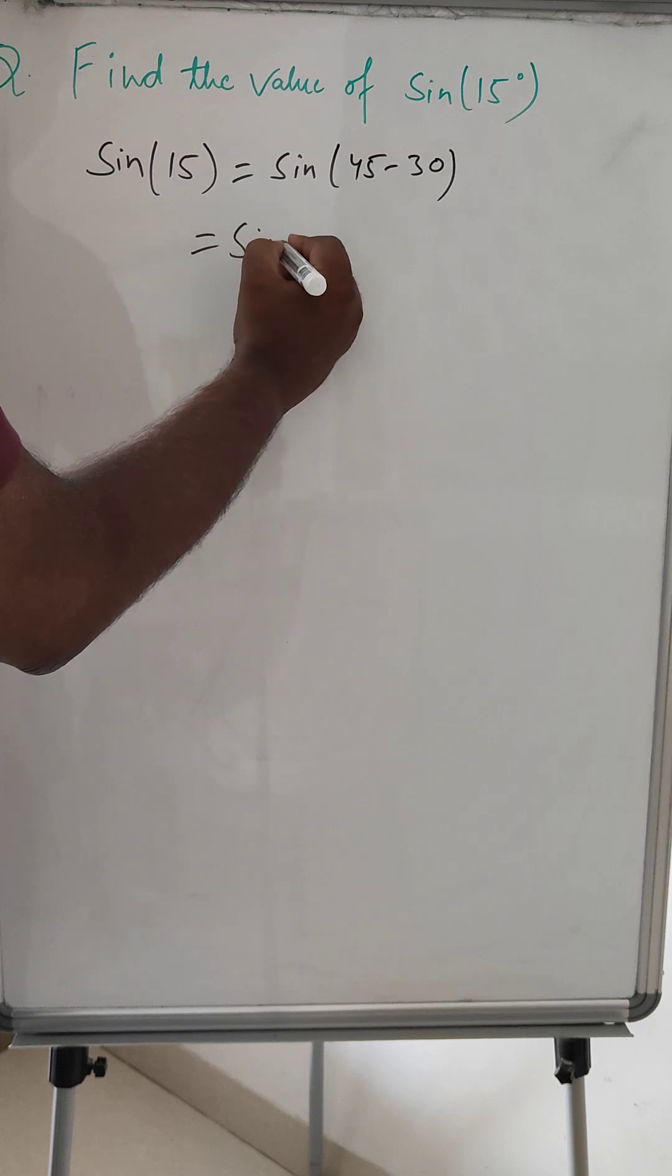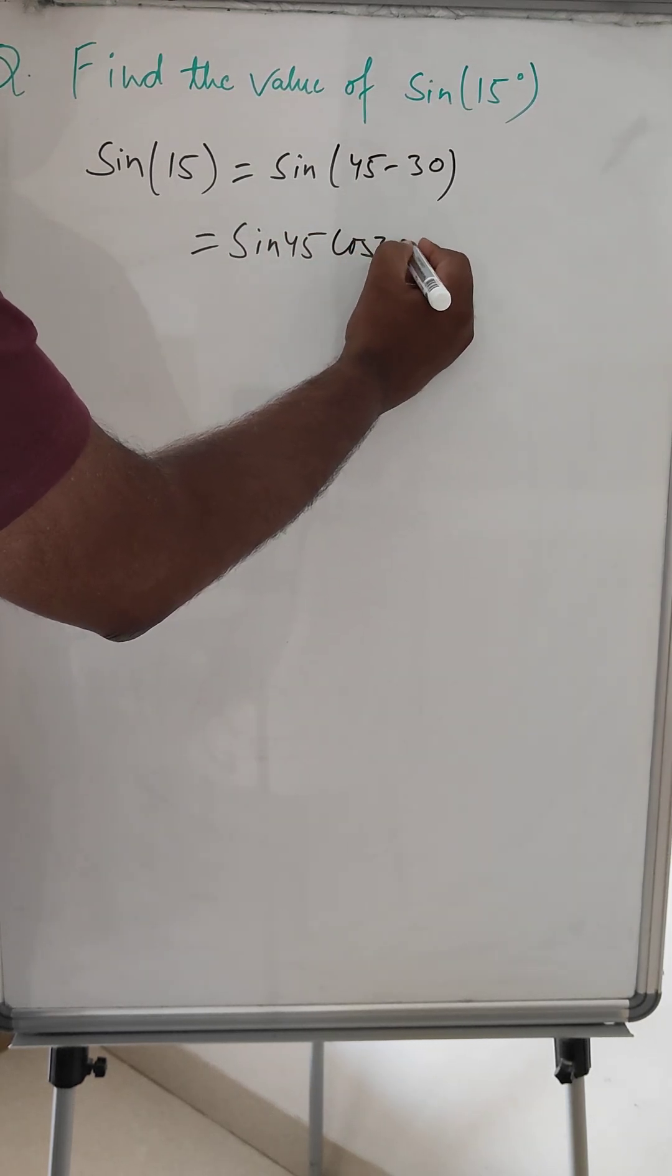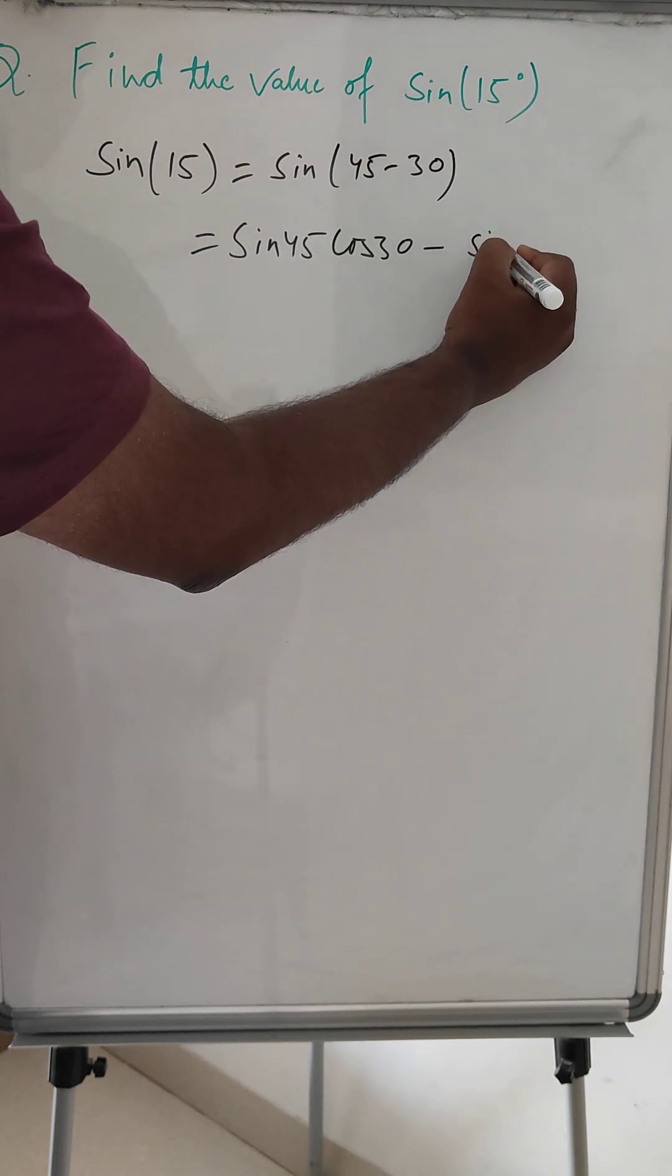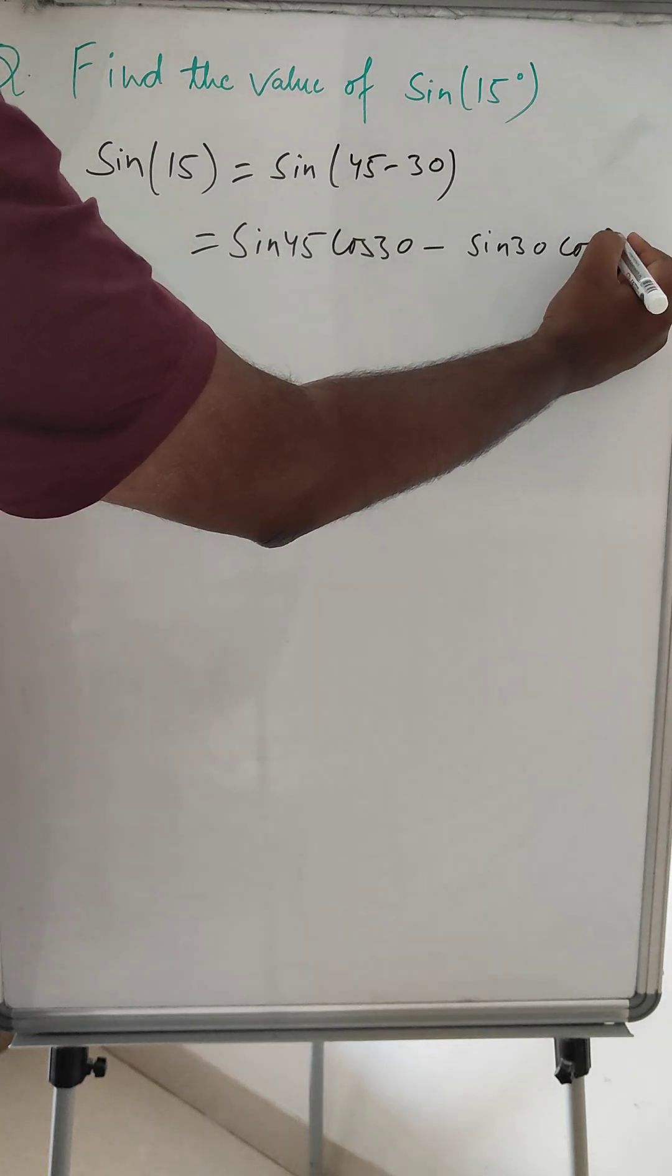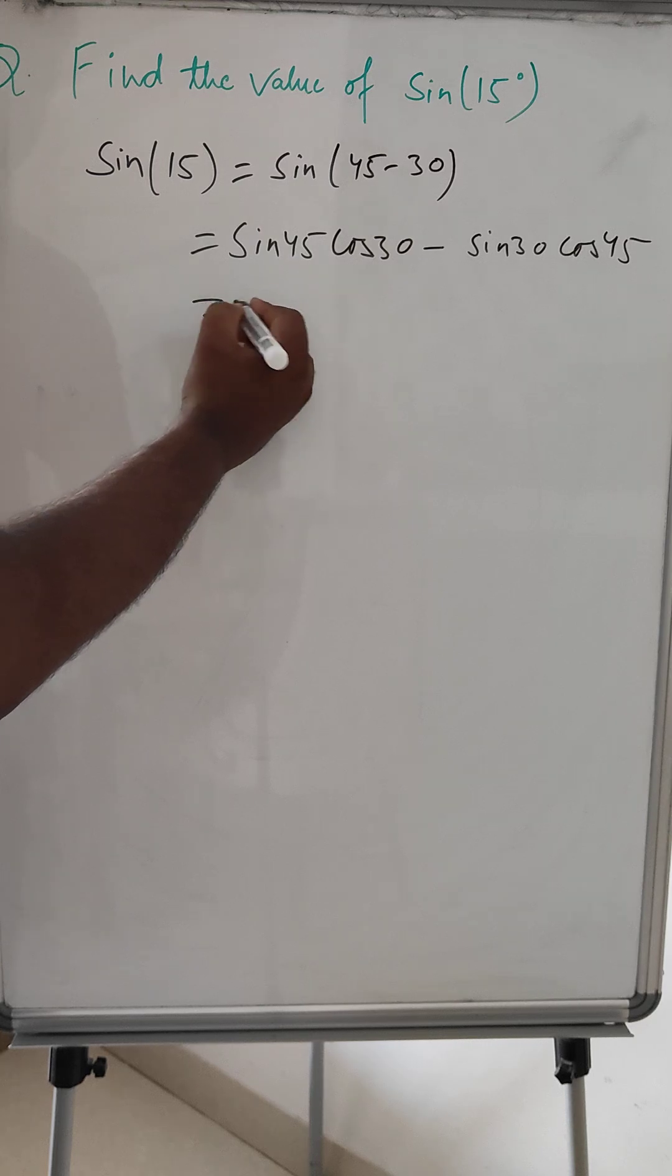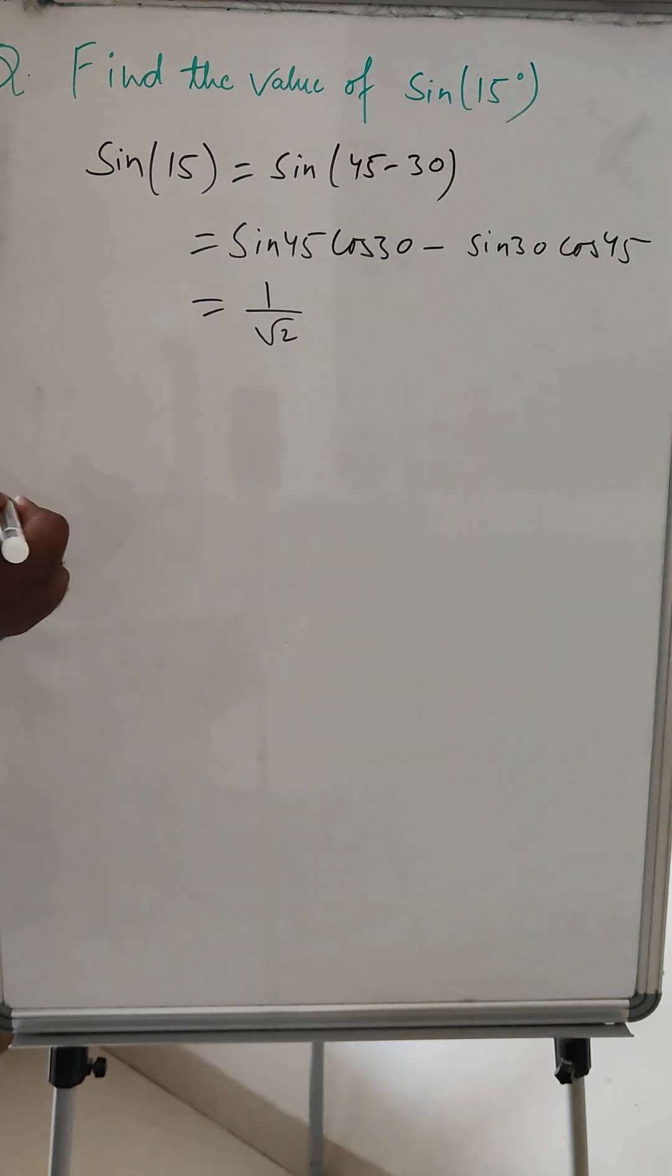So sin 45 cos 30 minus sin 30 cos 45. So sin 45 is how much? 1 over root 2.